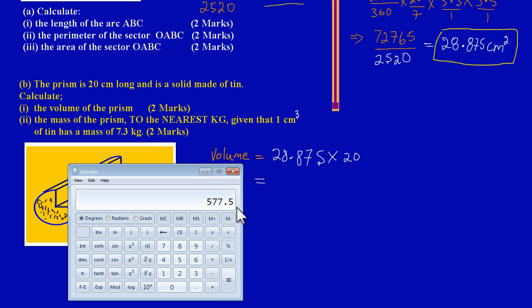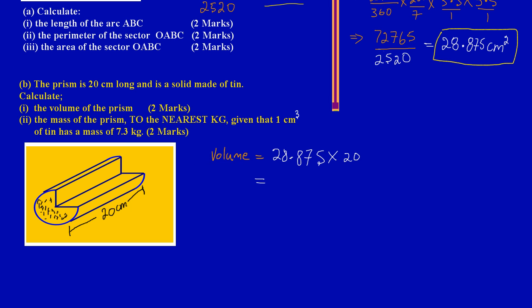577 and a half centimeters cubed because we're working with volume. This works out to be 577.5 centimeters cubed. That's part one of part B.